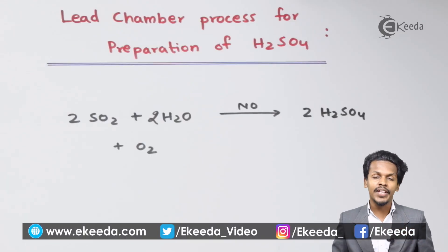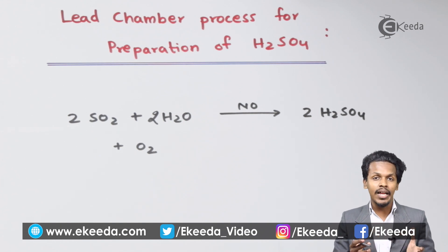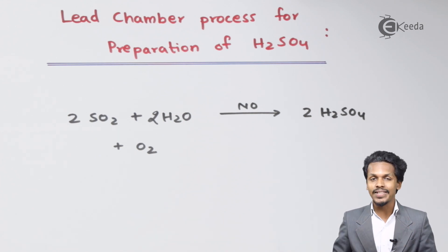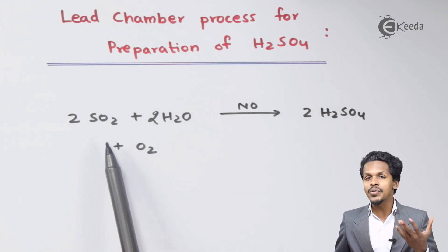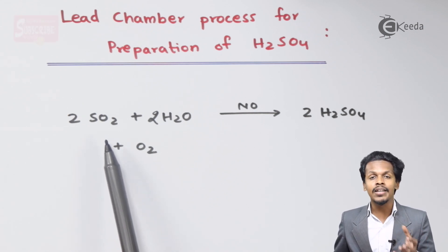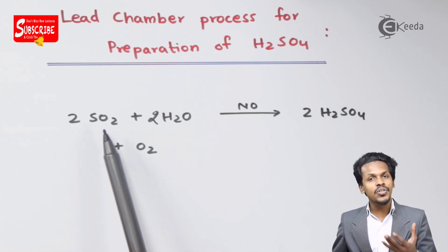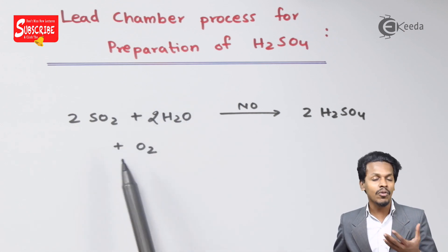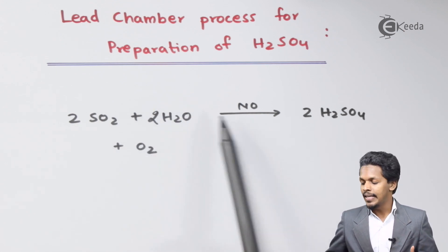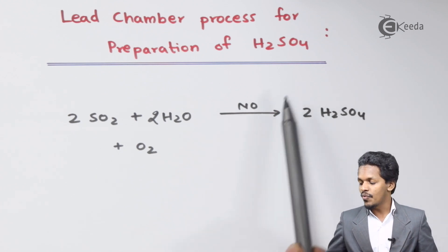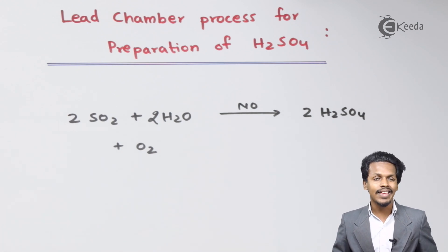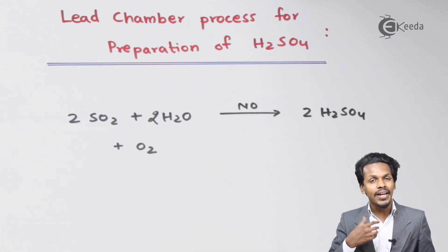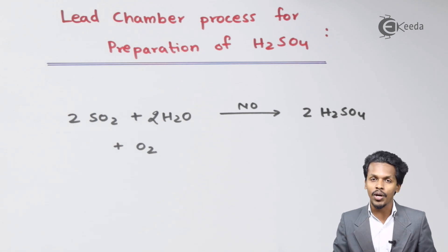This is the other method where we can prepare H₂SO₄ — the Lead Chamber Process. The overall reaction involves two moles of SO₂ reacted with two moles of H₂O in the presence of oxygen, with nitric acid as the catalyst, so as to form two moles of H₂SO₄. Although written as a one-step reaction, it actually takes multiple steps to prepare H₂SO₄.